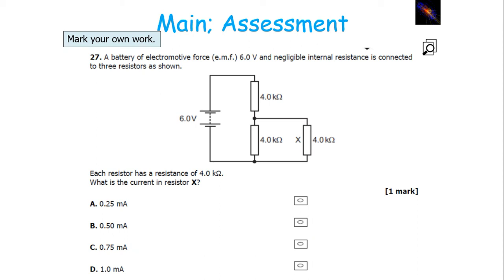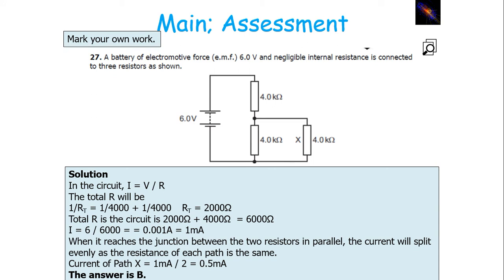To find the current in resistor X: current in the circuit is V over R. The total resistance — working out the parallel branch first — is 1 over 4,000 plus 1 over 4,000, flipped to give 2,000 ohms. Adding the series 4,000 ohm resistor gives a total of 6,000 ohms. So current is 6 over 6,000, which is 0.001 amps or 1 milliamp. When this reaches the junction between the two parallel resistors of equal resistance (4,000 and 4,000 ohms), the current splits equally, so it's 1 milliamp over 2, which is 0.5 milliamps.